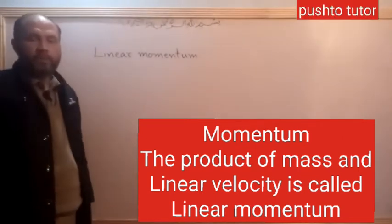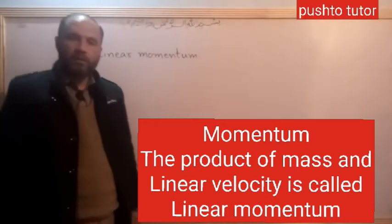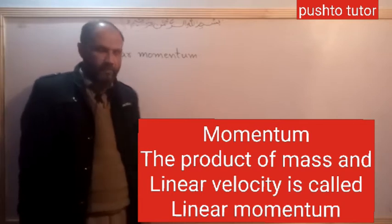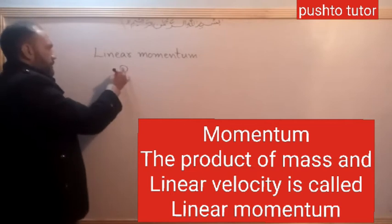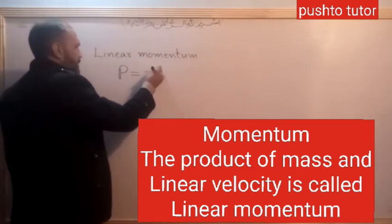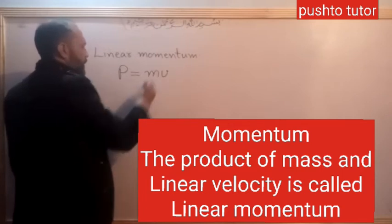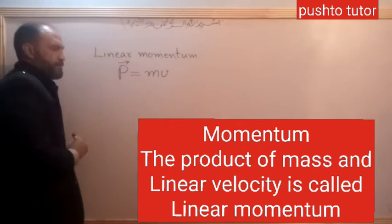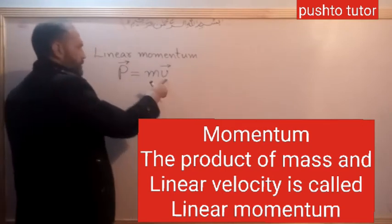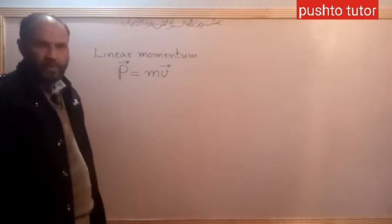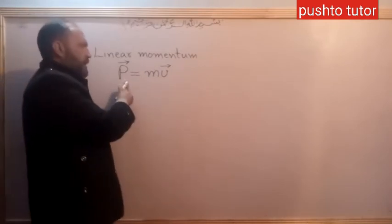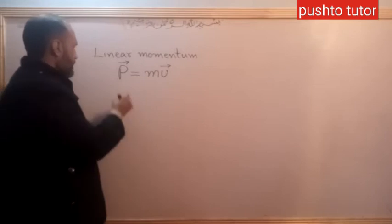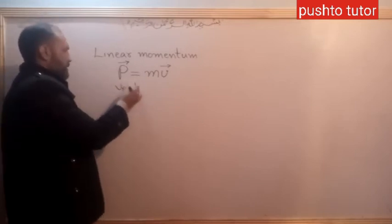Linear momentum: the product of mass and linear velocity of a body is called its linear momentum. The equation is P equal to MV. It is a vector quantity. The direction of momentum is the same as the direction of velocity.